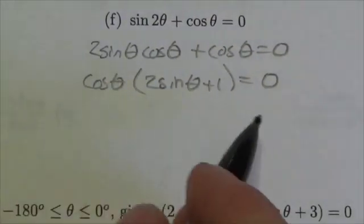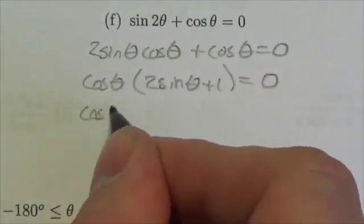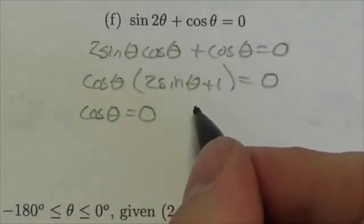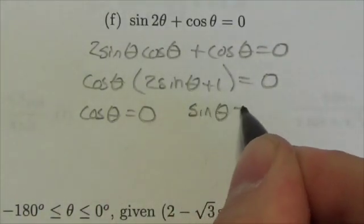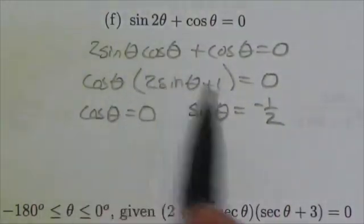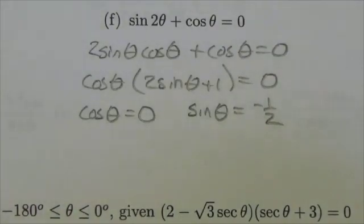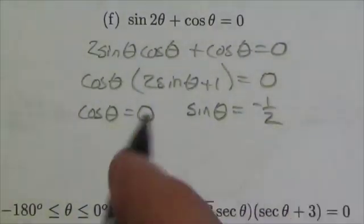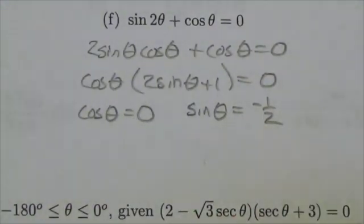Now I've got two different scenarios here. Either the cosine of theta is equal to zero, or the sine of theta would have to be equal to negative one-half when you set each of these factors equal to zero. So now let's just think about this. Let's think about cosine of theta equal to zero to start off with.